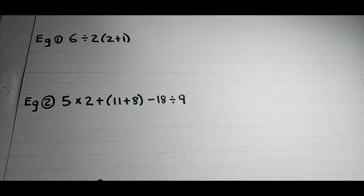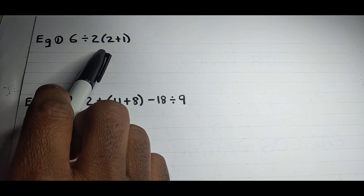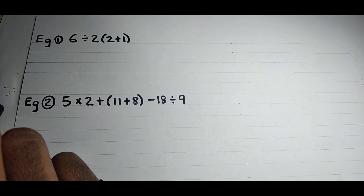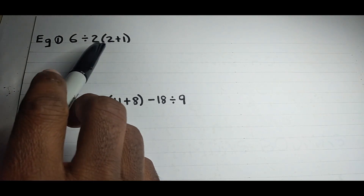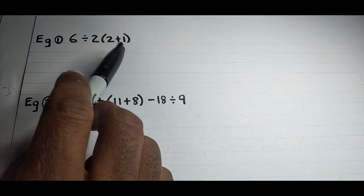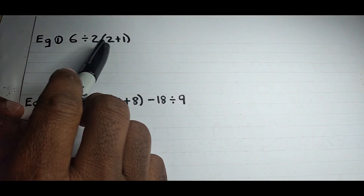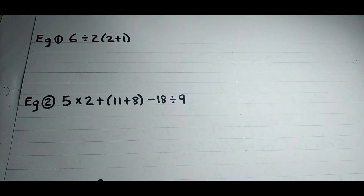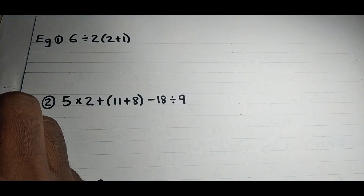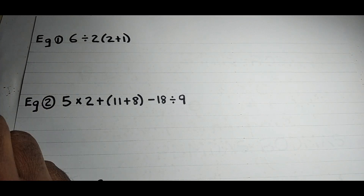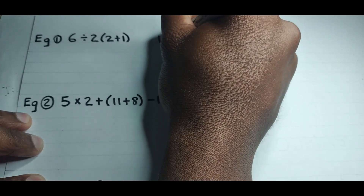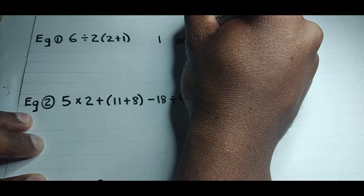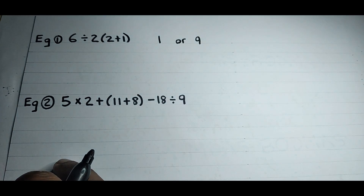Here we have a question posted to the Facebook page for the channel — Chris Maths Academy, if you haven't followed yet. The problem is six divided by two, with two plus one in brackets. This was a viral math problem some years ago. Some people got one as the answer while others got nine.